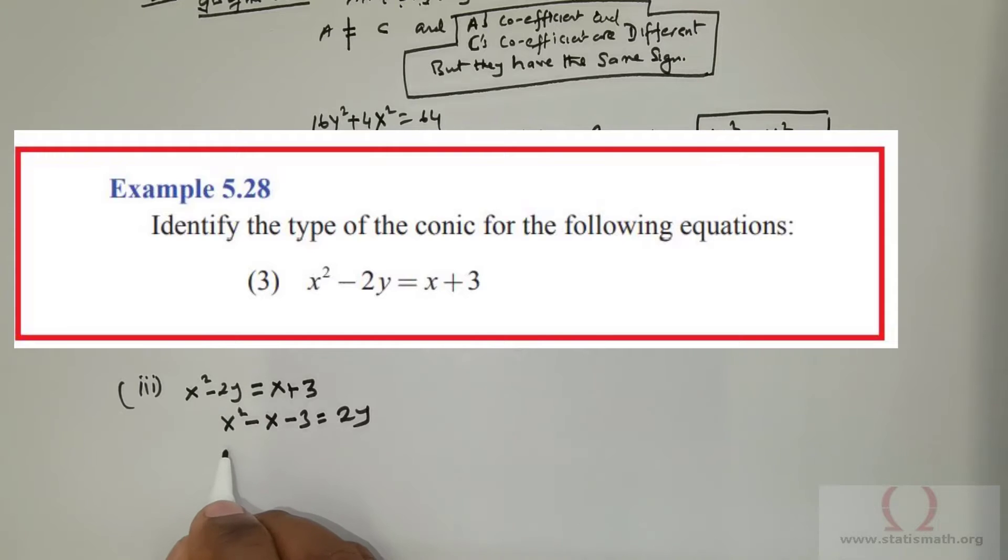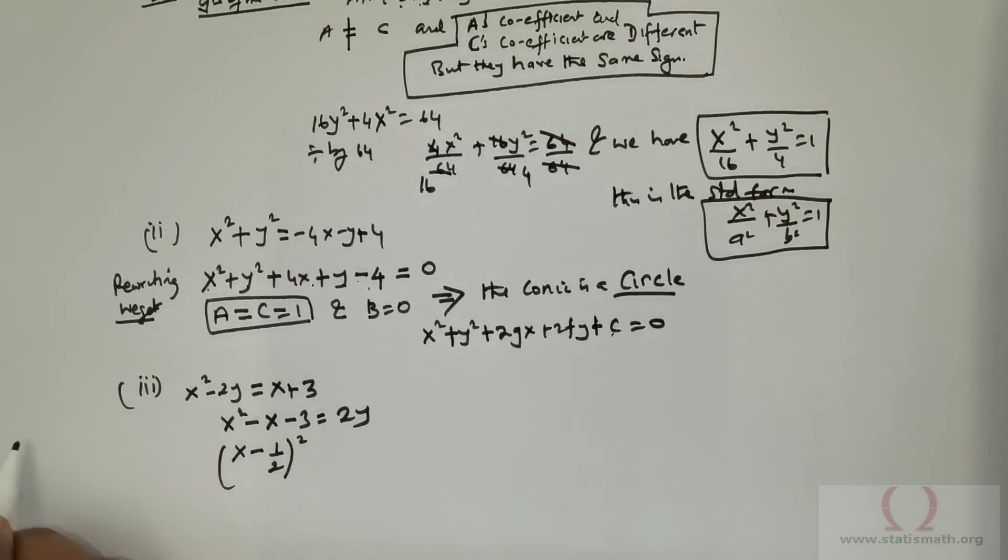And you can rewrite this as x negative 1 over 2, raised to the power 2. Now, if you were to expand this, this is going to give me x squared negative x and positive 1 over 4, which has to be removed. So we remove this 1 over 4.